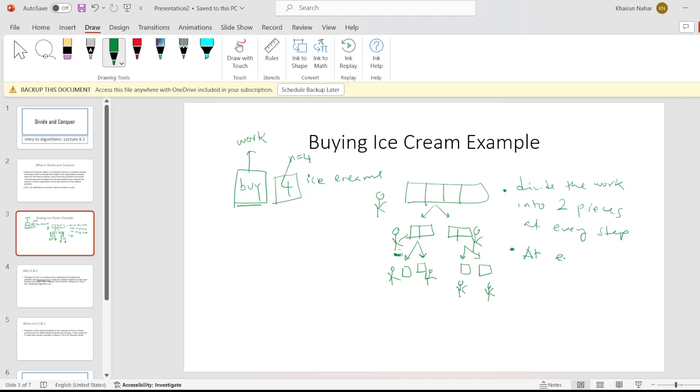At every step, every person is doing the same work. And what is the work? In this case, it's buy. And in the last step over here, we can't divide one ice cream anymore, so at this step we stop. So this is the base case.